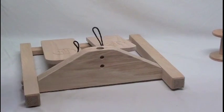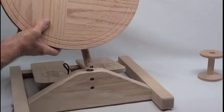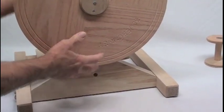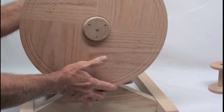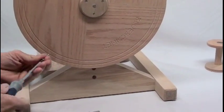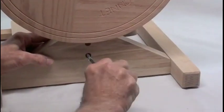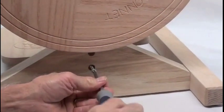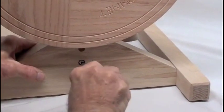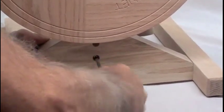To begin, take your upright and wheel assembly and insert the tenon into the base with the wheel facing the back. Then take one of the two screws and with the screwdriver put the screw in. Tighten it all the way down.